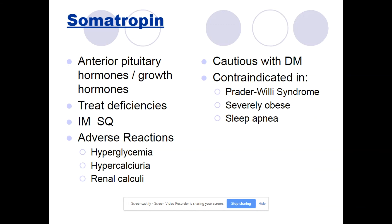Somatotropin is an anterior pituitary hormone, or growth hormone, used to treat growth hormone deficiencies. It can be given IM or sub-Q, and sometimes topically, because this medication is destroyed inside the GI tract and will never be given PO. Adverse reactions include hyperglycemia, hypercalciuria, and renal calculi — hypercalciuria is high calcium in the urine, which causes renal calculi since calcium often forms kidney stones. It can also cause hypersensitivity. Use caution in patients with diabetes mellitus, and it is contraindicated in Prader-Willi syndrome, severe obesity, and sleep apnea.